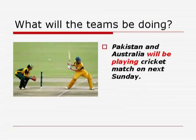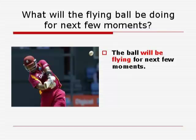Let us see a few examples. What will the teams be doing in the playground? Pakistan and Australia will be playing a cricket match on next Sunday. What will the flying ball be doing for the next few moments? In the picture you can see a white flying ball — it is hit very hard by the batsman. So you can make the sentence: The ball will be flying for the next few moments.